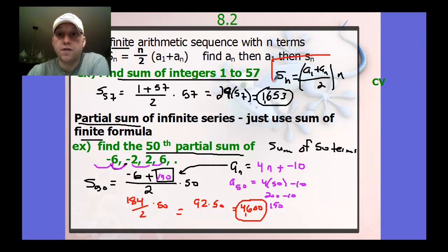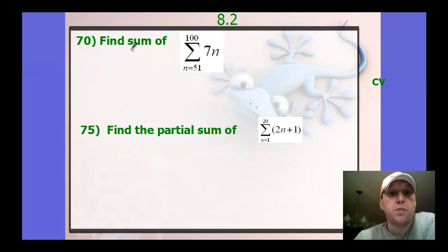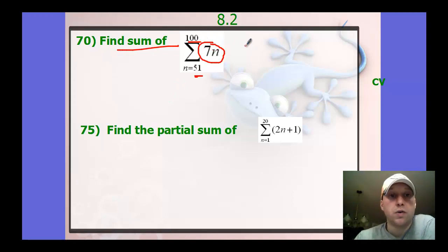So again, just using, this is the formula we're going to use. And those are on your formula sheet. So a few more here. Find the sum of this. Now this is using our summation notation. So this is from 51 to 100. This is a little different. Of this is the rule. So it's still going to be the same formula. The first term plus the last term over 2 times the amount of terms we have.